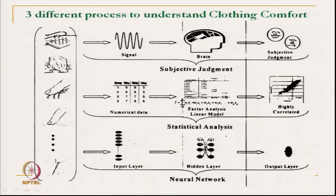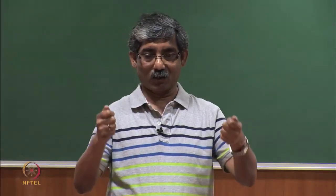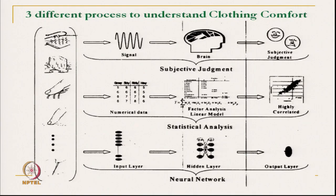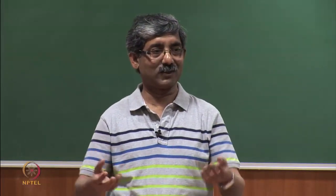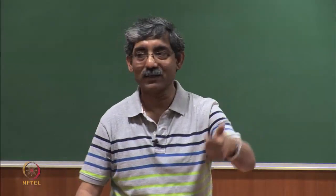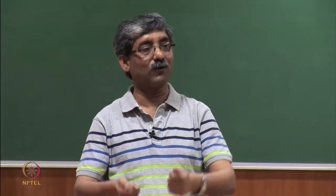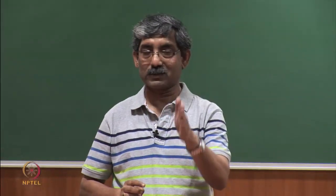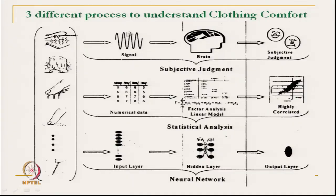Three different techniques are used. First is the subjective judgment technique — basically a wear trial technique. Clothing is given to different people or experts and they are asked to judge whether it is comfortable or not: what type of signal they are getting — whether it is warm or cold, harsh or soft, stiff or flexible. The brain gives some output value and we get a subjective judgment of whether it is comfortable or not.